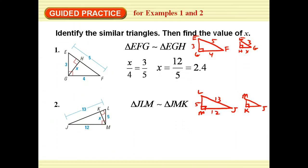I'm looking for KM, so my X goes here. What I know is JM, which is 12. And so I can set up my proportion: X is to 5 as 12 is to 13. And when I solve, I say it's approximately 4.61.